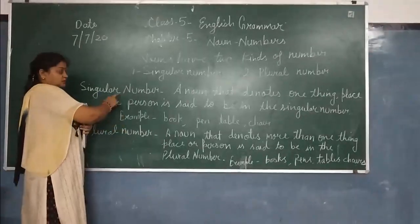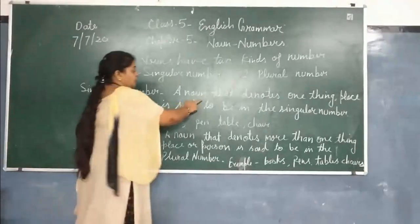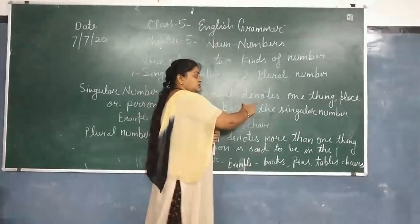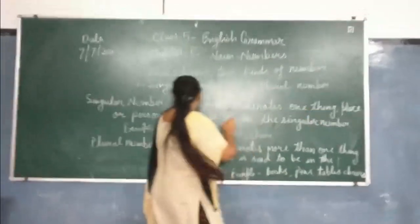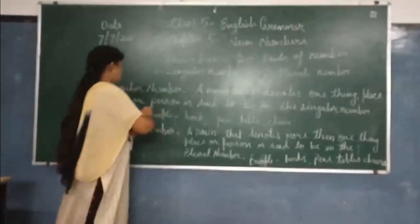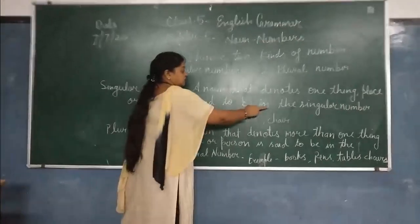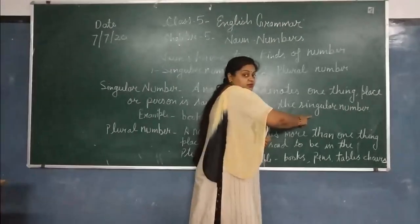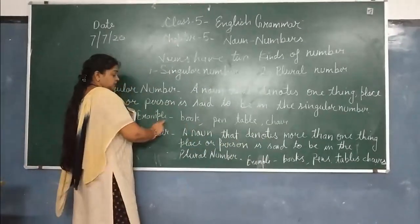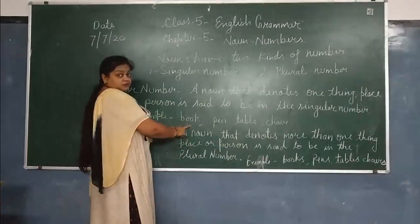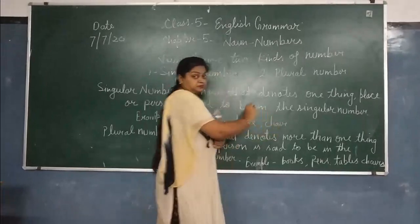First, singular number. A noun that refers to one thing, place, or person is said to be in the singular number. For example: book, pen, table, chair.